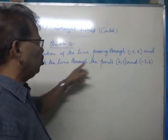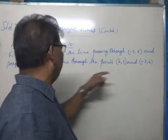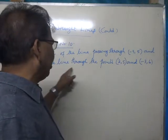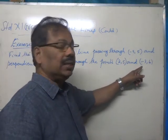Find the equation of the line passing through (-3, 5) and perpendicular to the line through the points (2, 5) and (-3, 6).